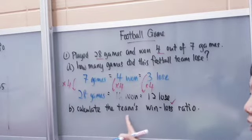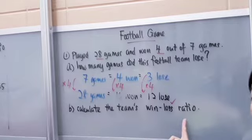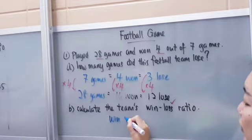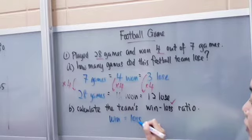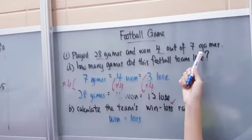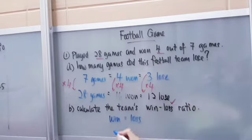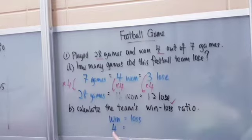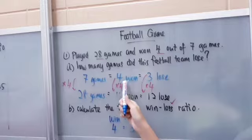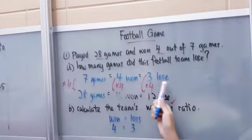Part B: calculate the team's win-loss ratio. The ratio of wins to losses — coming back to the question, for every seven games four are won and three are lost. So the team's win-loss ratio is four to three. You can also confirm this from Part A: 16 wins to 12 losses simplifies to four to three.